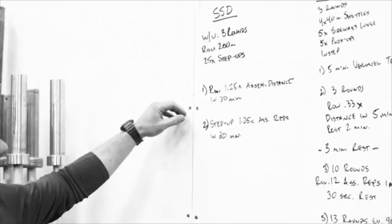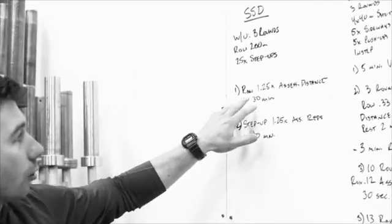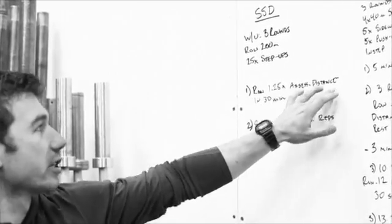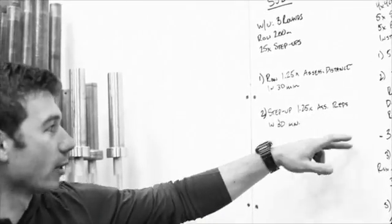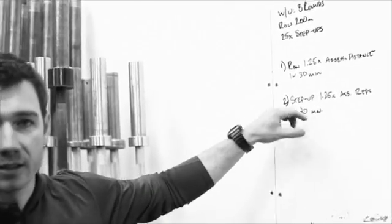Here's today's session. It's just row 1.25 times your assessment distance in 30 minutes and then step up 1.25 your assessment reps in 30 minutes. That's it. It's real simple.